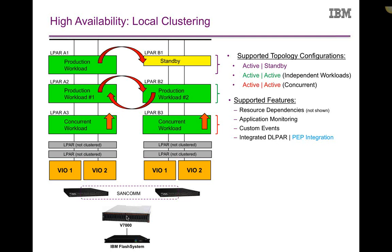As far as cluster features — we can set failback policies to fail back on a Saturday at 2 a.m. instead of failing back automatically. We have resource group dependencies, different monitors, and custom events where you can have entry points in the cluster processing to perform logic before starting your applications. We can also manipulate the size of the LPARs whenever we activate the application workloads. We've had integrated LPAR capabilities for a number of years where you can set up LPARs to run skinny on boot and expand when HA services start up.